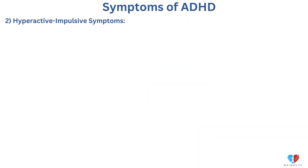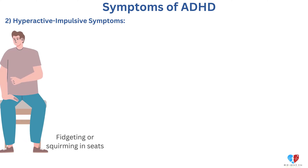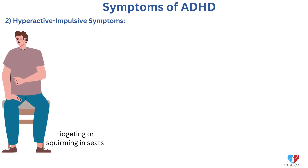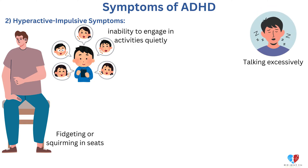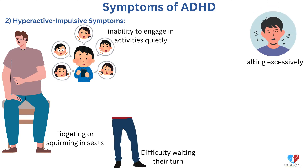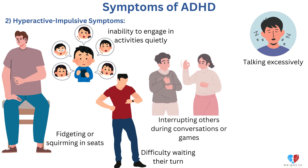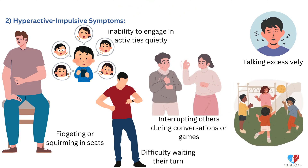2. Hyperactive-impulsive symptoms: Fidgeting or squirming in seats. Inability to engage in activities quietly. Talking excessively. Difficulty waiting their turn. Interrupting others during conversations or games.